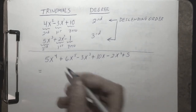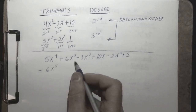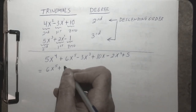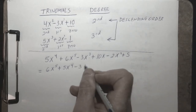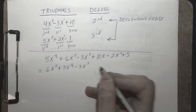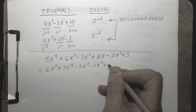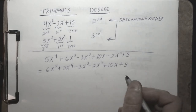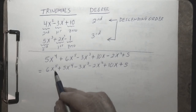To write this in descending order, we would put the fifth-degree term first since it is the highest degree term, then the fourth-degree term 5x⁴, then the third-degree term 3x³, then the second-degree term −2x², then the first-degree term +10x, and then the constant term +5 at the end. This would be a fifth-degree polynomial, since that is the highest degree term of the polynomial.